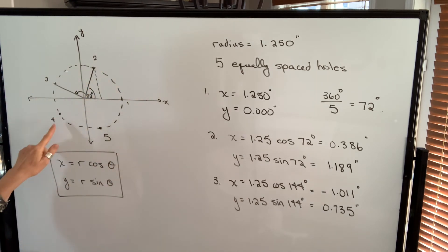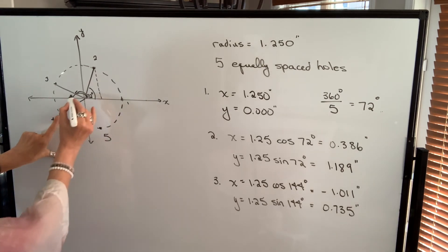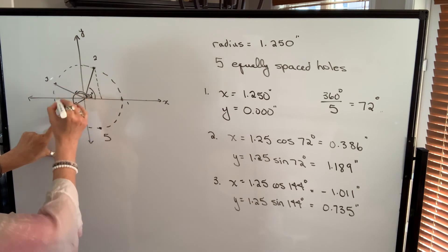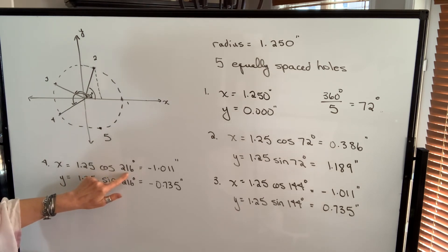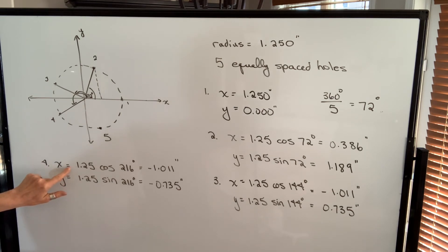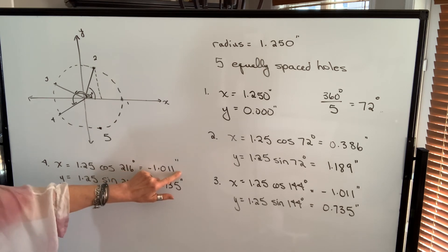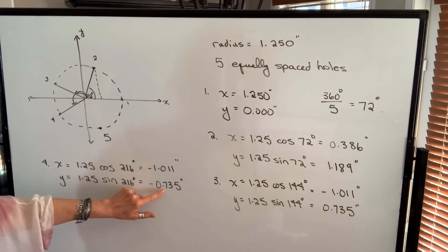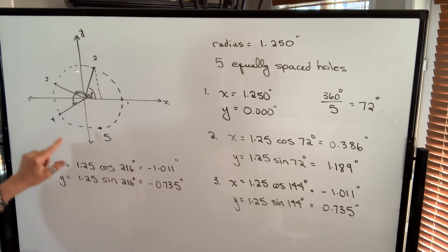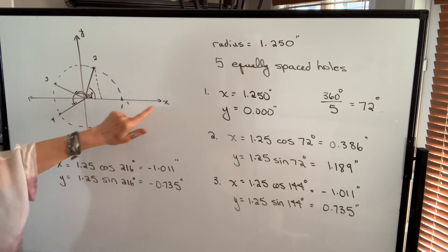For hole number four, we take 144 degrees and add another 72 degrees to get 216 degrees. The x-coordinate is the cosine of 216 degrees times 1.25, giving negative 1.011 inches. The y-coordinate is 1.25 times the sine of 216 degrees, giving negative 0.735 inches. It makes sense that both are negative because hole four is to the left of the y-axis and below the x-axis.